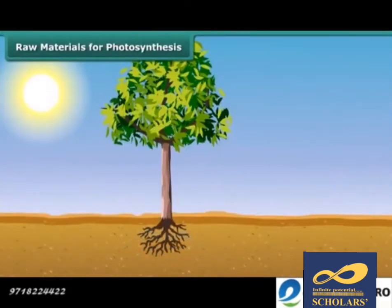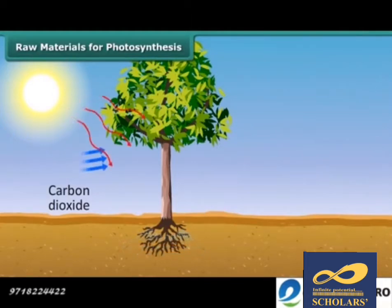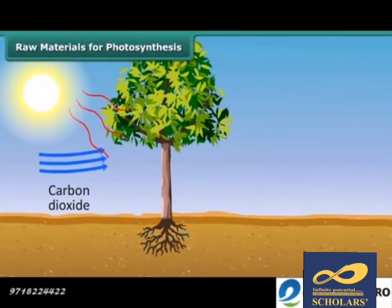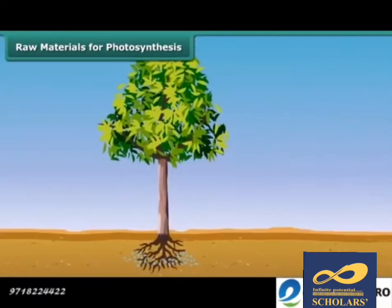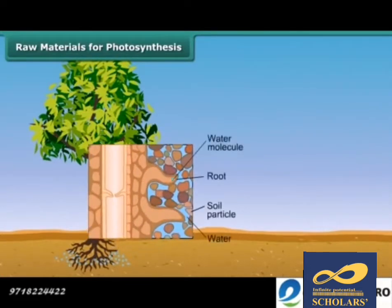Now you know that in plants, water, minerals, and carbon dioxide are raw materials for the synthesis of food. Do you also know how plants obtain these raw materials from the surroundings and how they transport them to the food factories of the plant? Water and dissolved minerals are absorbed directly from the soil through roots and sent to the leaves by means of many small vessels present in the stem.